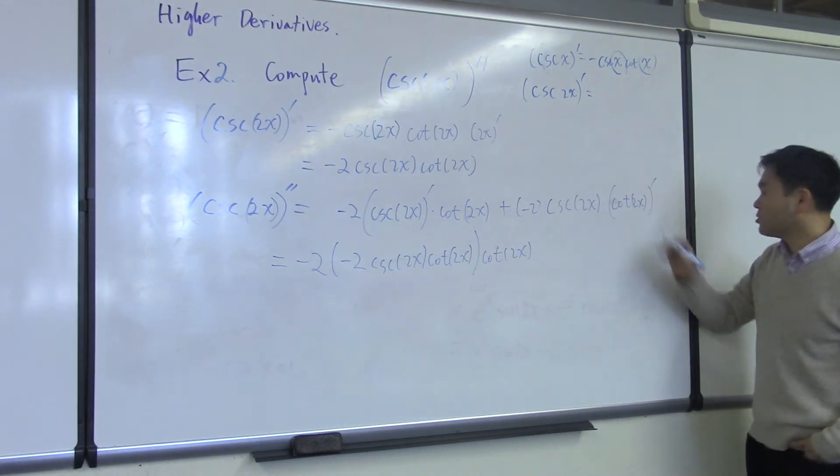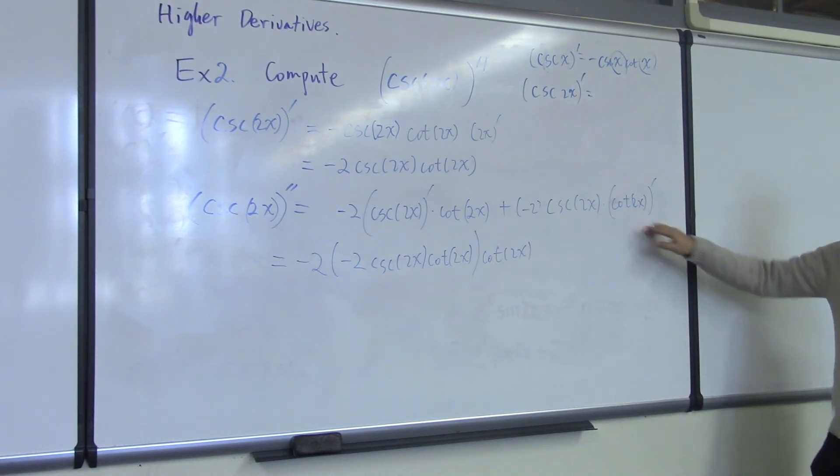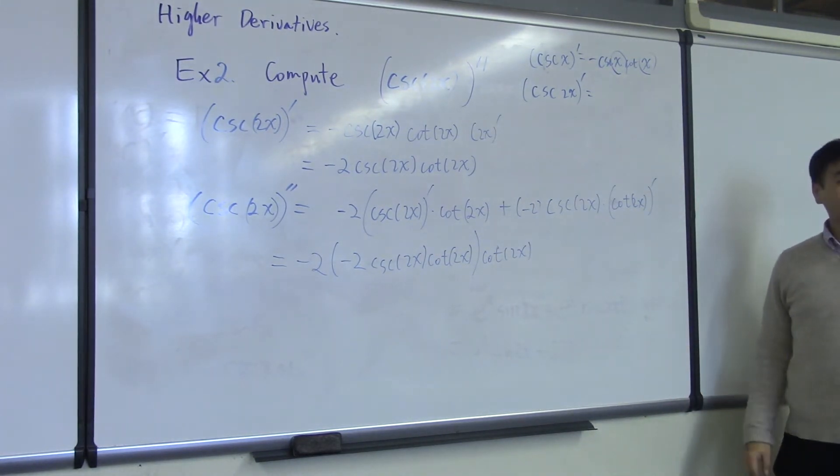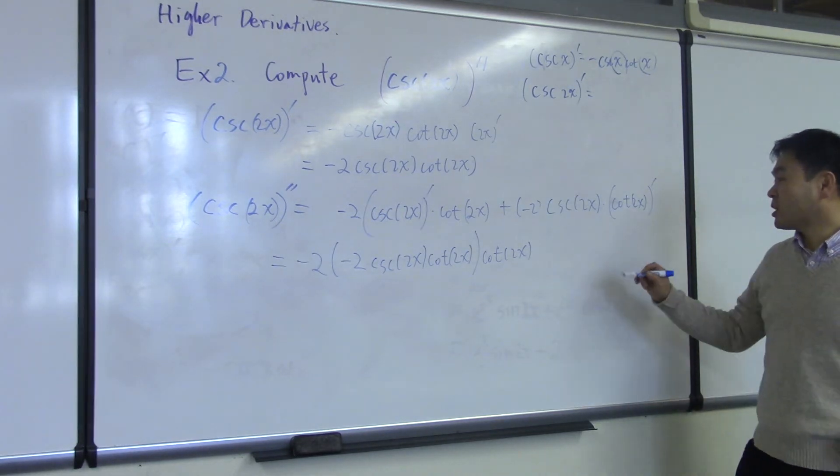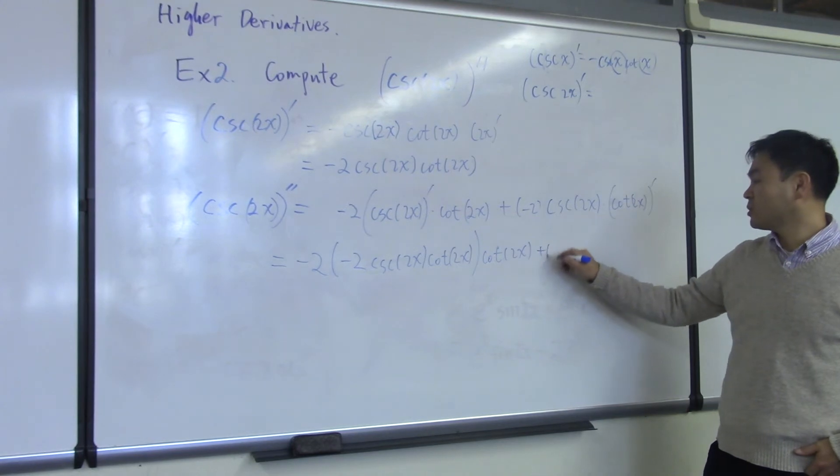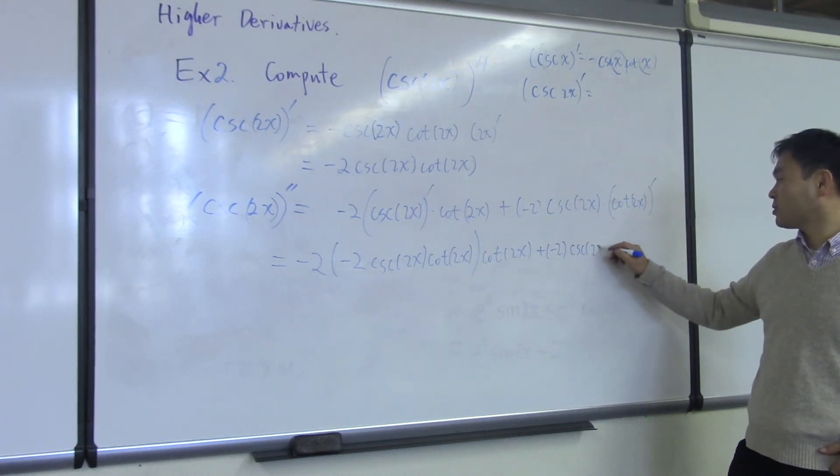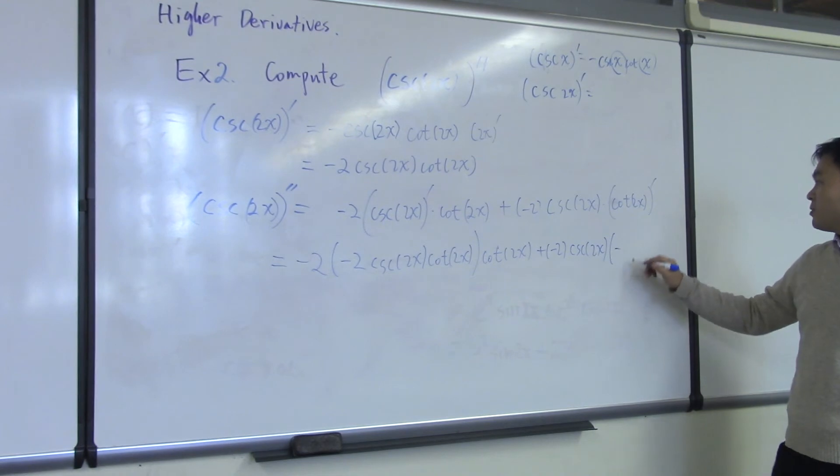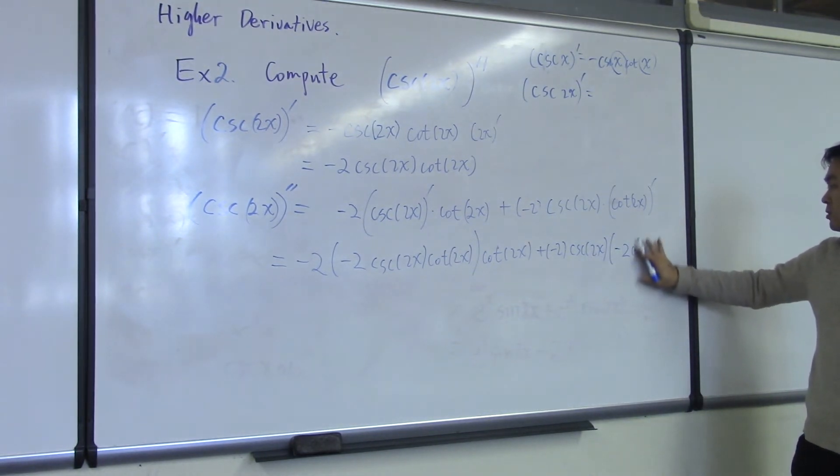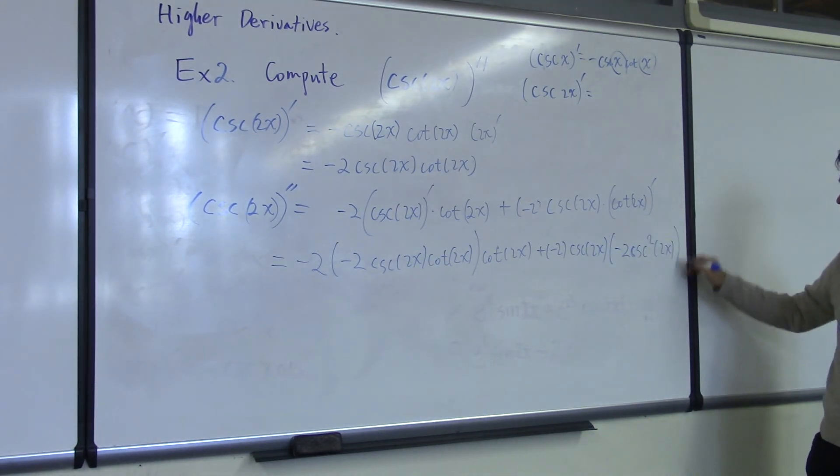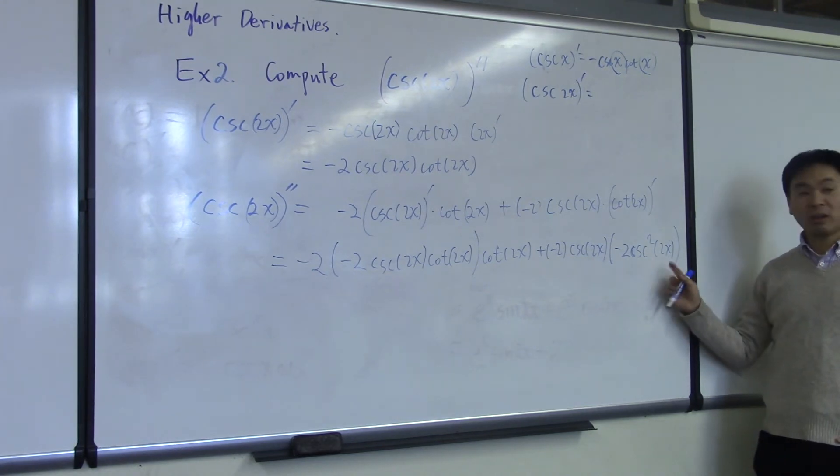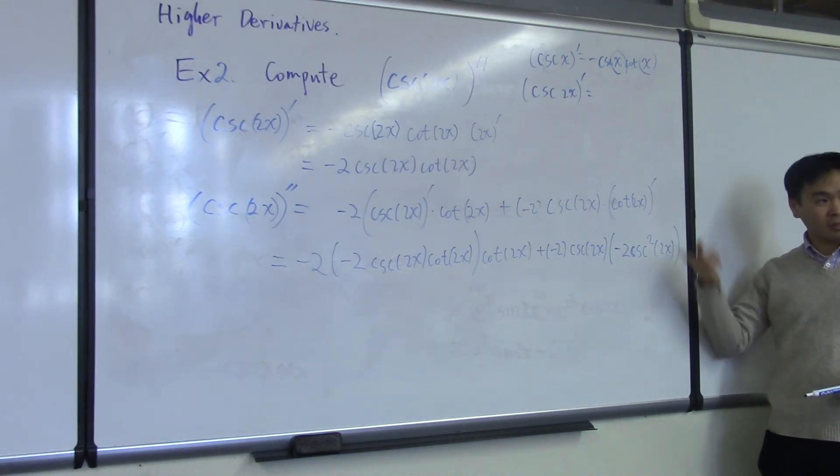Now this one's new. What's the derivative of cotangent? Negative cosecant, right? Cosecant squared, right? So that gives you plus negative 2 cosecant of 2x—that's negative 2 cosecant squared of 2x, where this 2 came from the chain rule. If you pull the inside function outside and differentiate, it gives you that.